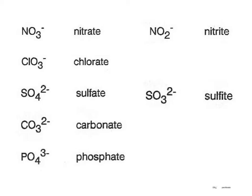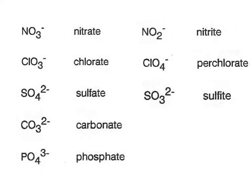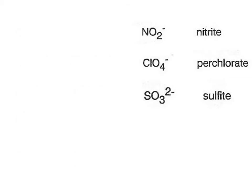Now nitrite and sulfite have been added to the list. Nitrite and sulfite have exactly the same charge as nitrate and sulfate — the same charge, but the number of oxygens changes. When I go from -ate to -ite, it goes down by one oxygen but keeps the same charge. Perchlorate has also been added: it keeps the same charge as chlorate but adds one extra oxygen. So the prefix 'per' means add an oxygen. Start mixing these into your flashcards so you can readily recognize the difference between nitrate and nitrite, sulfate and sulfite, and chlorate and perchlorate.